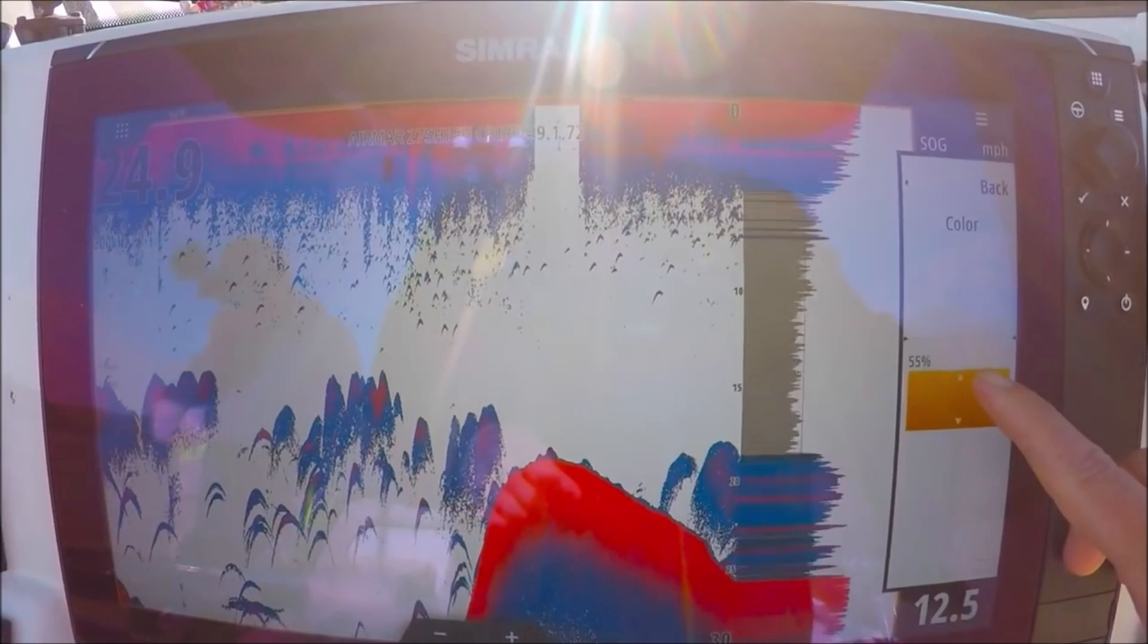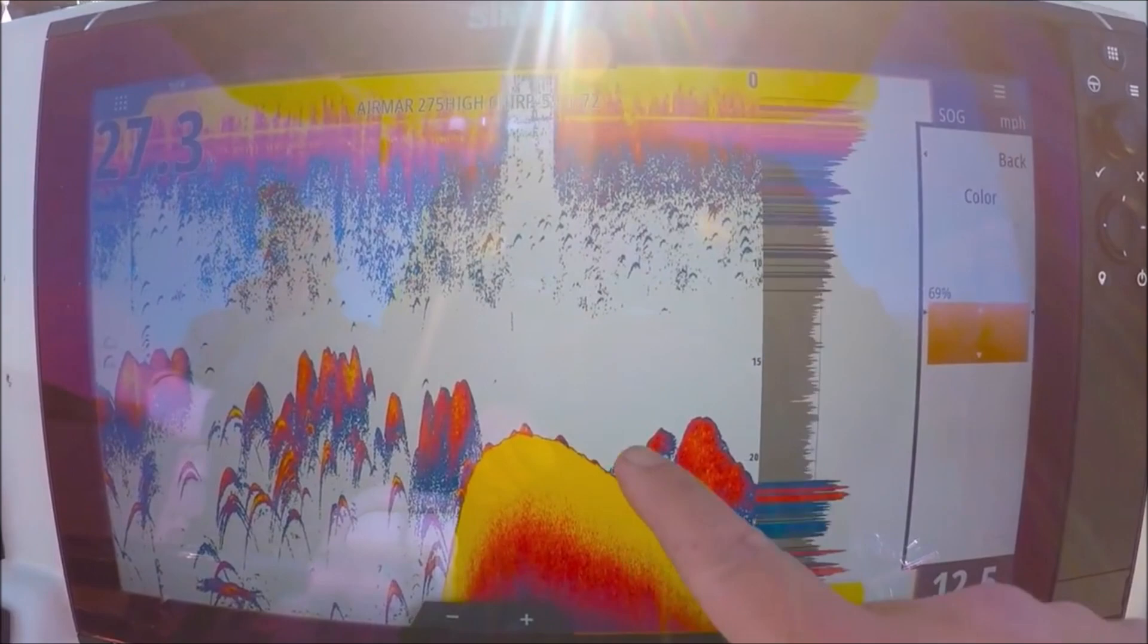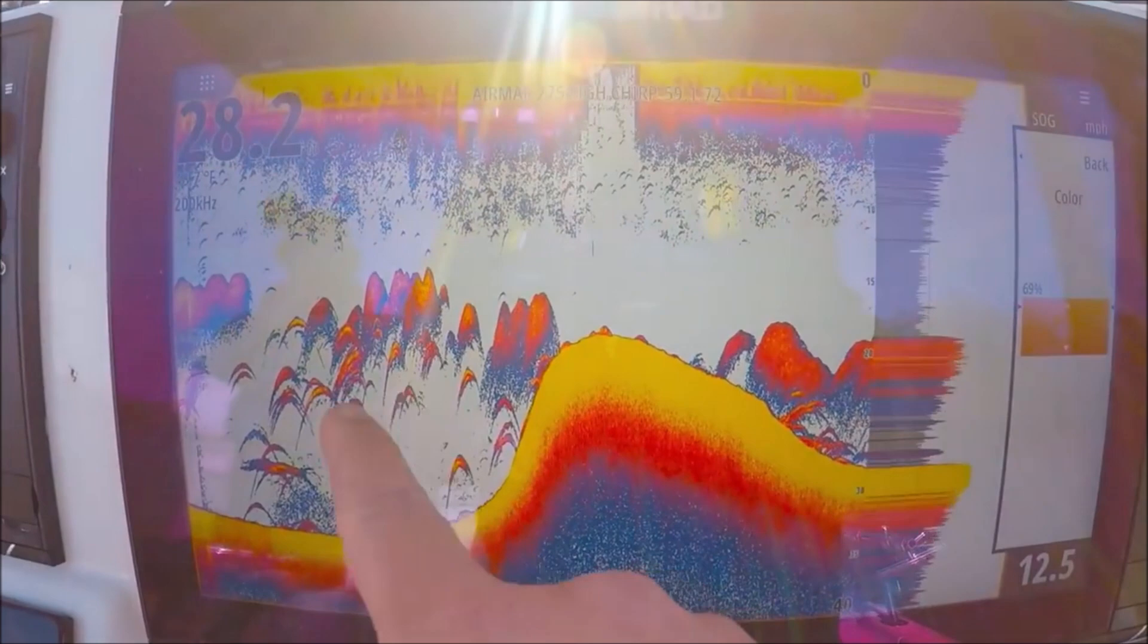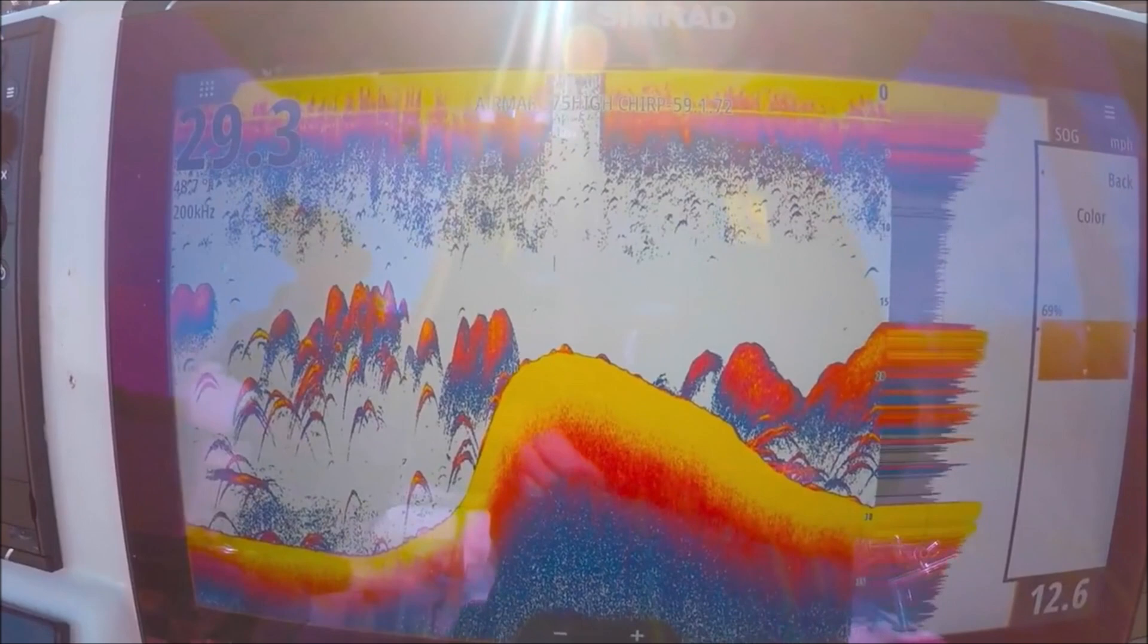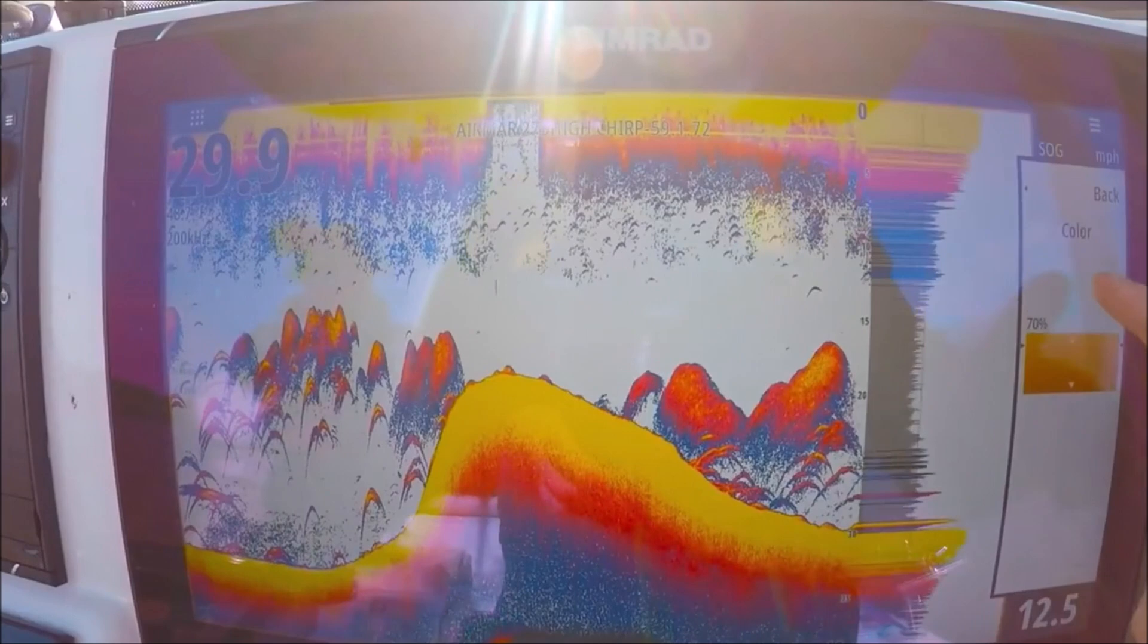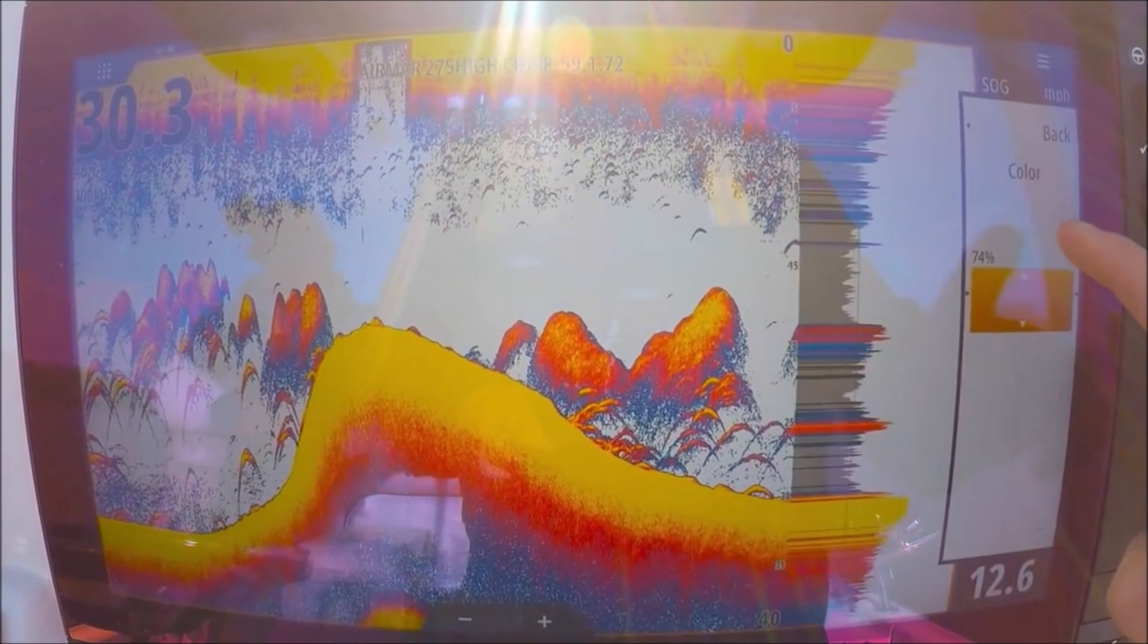In this palette, yellow is the strongest return. You can see yellow is the bottom, so these are solid marks here. These are air bladders and fish - these should be yellow because we know those are good returns. Our solid color is yellow, so I want some yellow in my arches. I'm gonna turn my color up so I start to see yellow in them. Those arches need to start turning yellow.